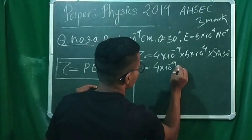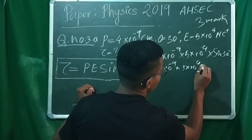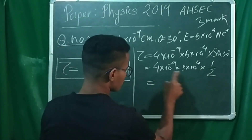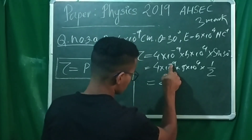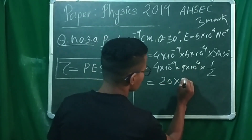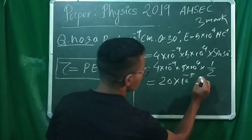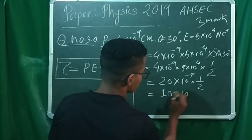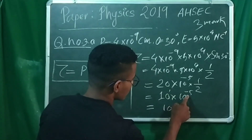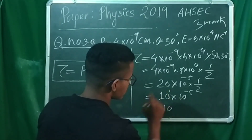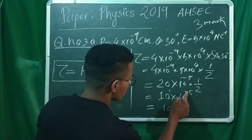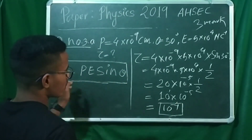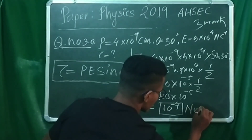So tau equals 4 into 10 raised to the power minus 9, into 5 into 10 raised to the power 4, into sin 30. Now sin 30 equals 1 by 2. So 4 into 5 equals 20, and the result gives us the torque value in Newton meter.